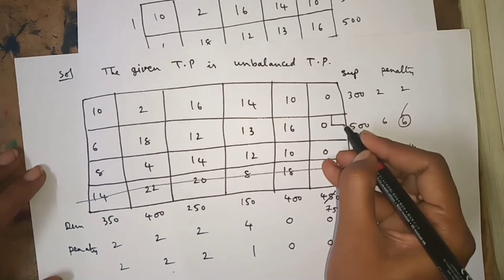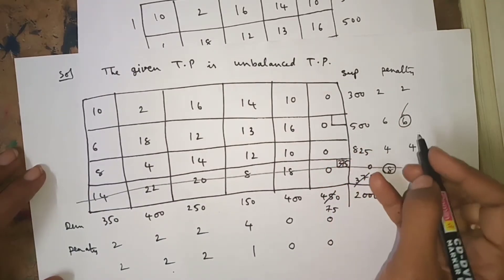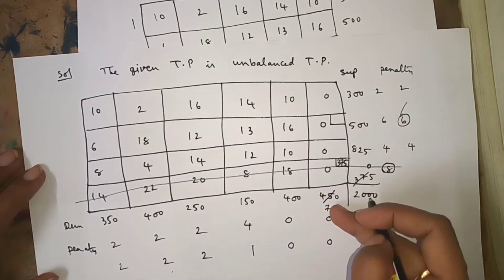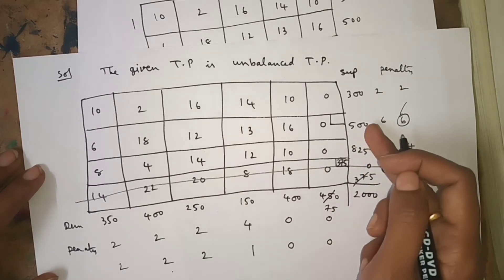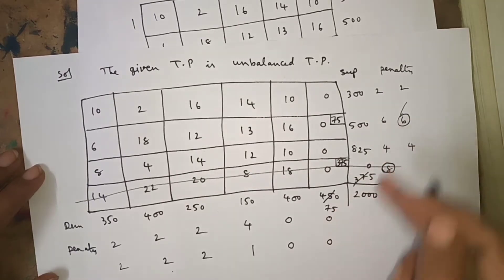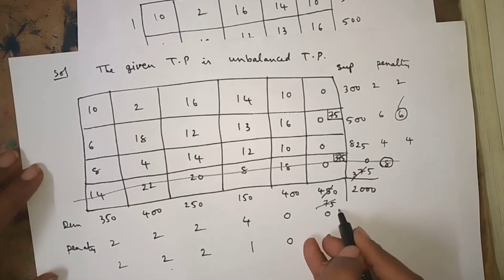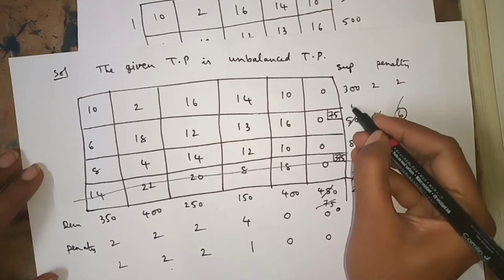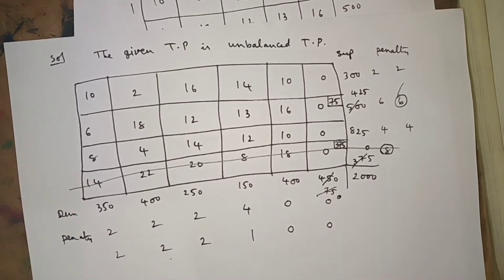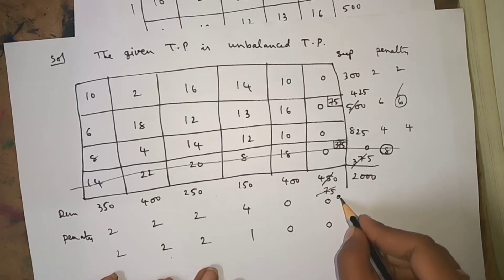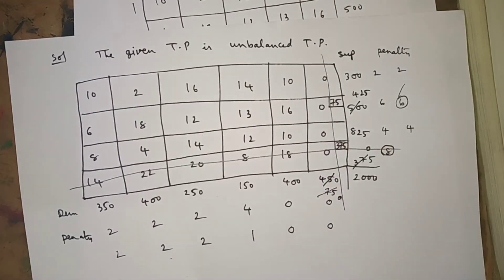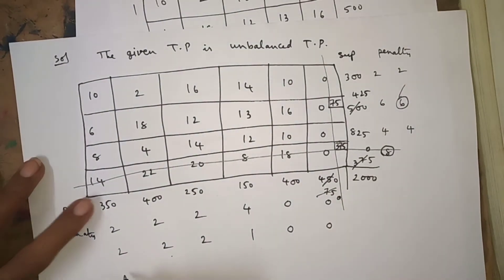Entering into the second row: the least cost element is 0. Supply is 500, demand remaining is 75 — which one is minimum? 75. I allocate 75 here, leaving 500 minus 75 = 425 remaining. Wherever we get demand equal to 0, cancel that column. Now omit that column and find penalties again.